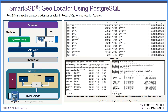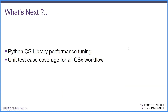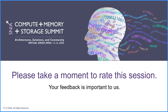Moving to our last slide — what is next? Python CS library performance tuning is one of the key areas we are looking at. Currently, the overhead introduced by the Python layer is just under 10% of the overall stack, and we would like to further reduce it to around 5% where possible. We also want to add more unit test coverage for all the CSX flows as per the SNIA CS API definitions. Hope this is informative, and thank you for watching.